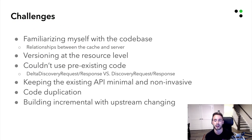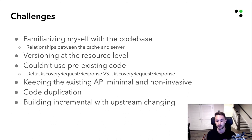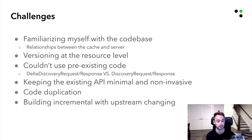I wanted to talk about some challenges when implementing this code and working in the repo. I spent quite a lot of time familiarizing myself with the codebase — I had to reverse engineer a lot of the relationships between the cache and the server, since I was just doing minor contributions before and didn't fully understand what the code was doing. In doing so, I went back and contributed a lot of documentation and resources for newcomers to read and hopefully better understand the code itself, so they don't have to share the same pain I did. The versioning at the resource level was another challenge — we had to develop a whole new algorithm for that, and couldn't reuse a lot of the preexisting code because of the differing discovery objects.